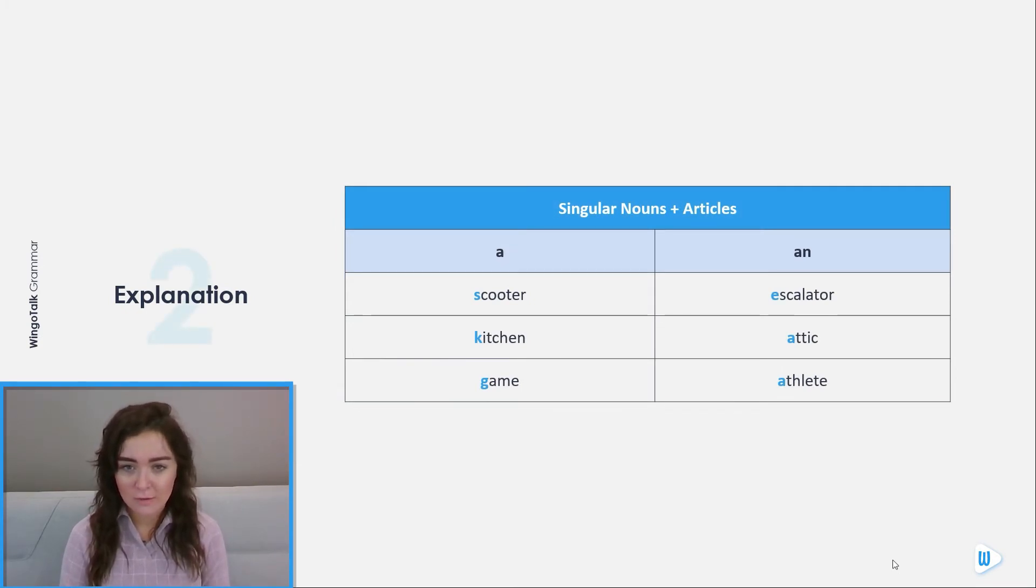Singular nouns and articles. So, a scooter, a kitchen, a game. An escalator, an attic, an athlete.